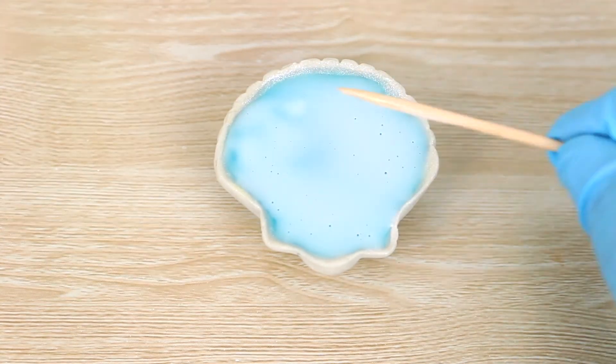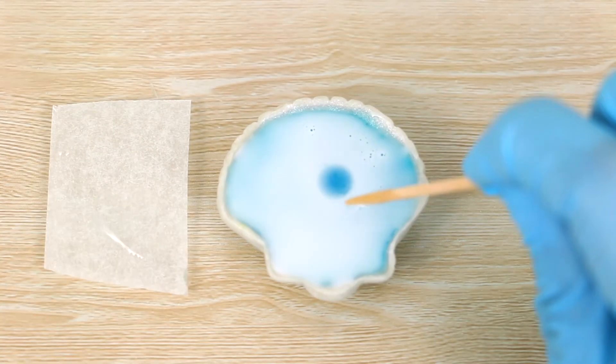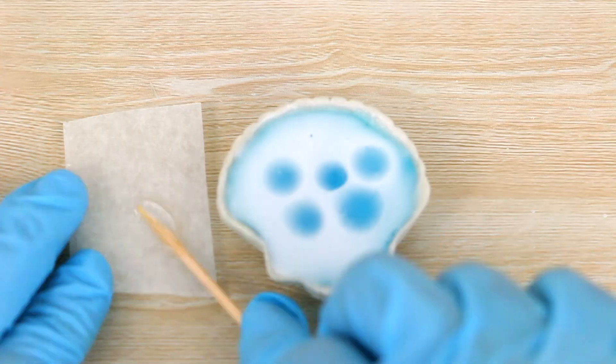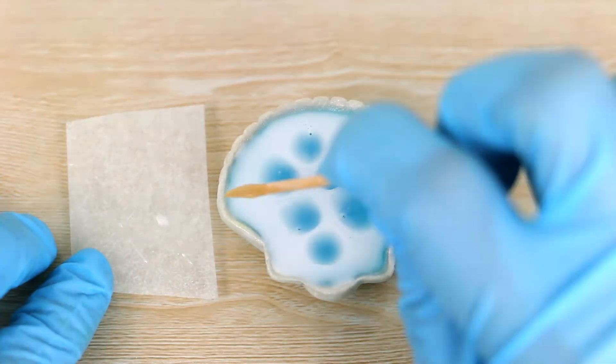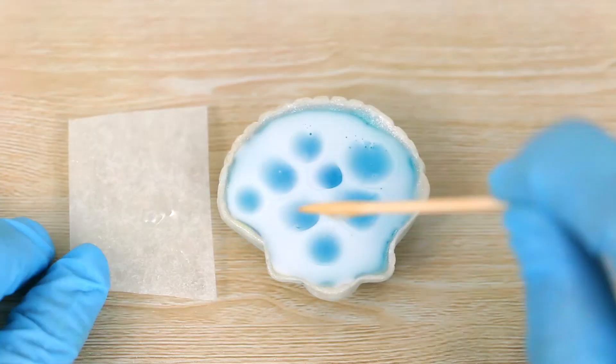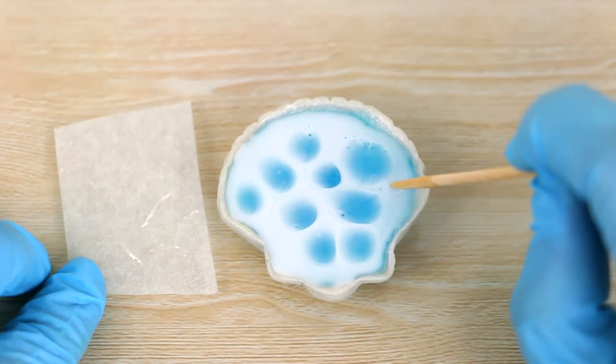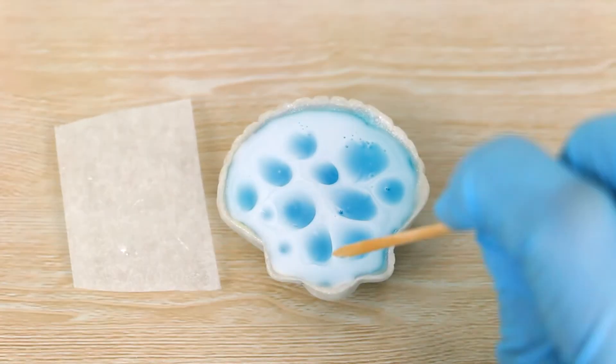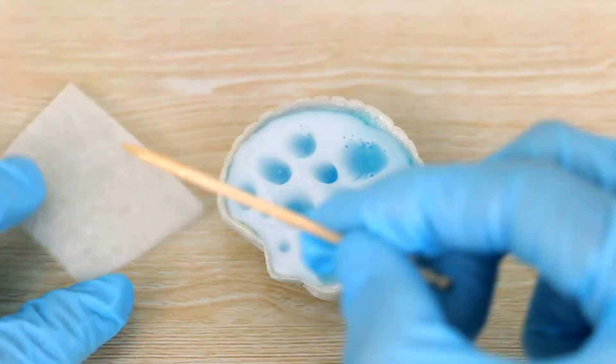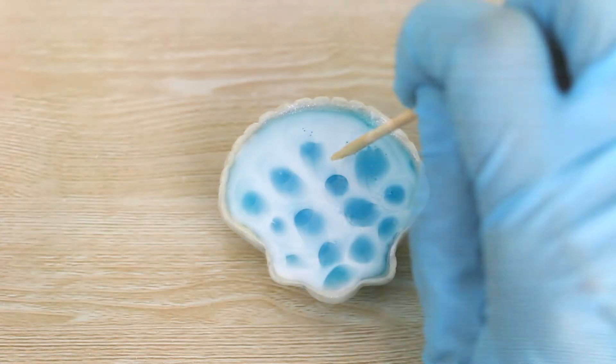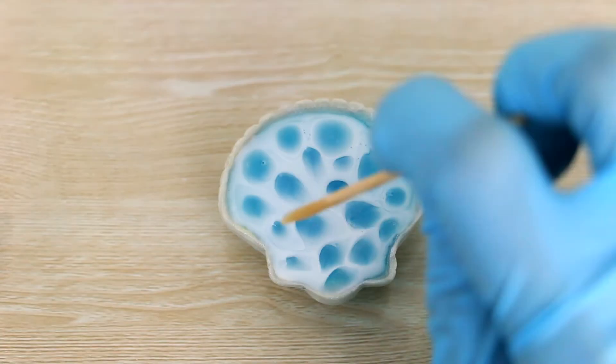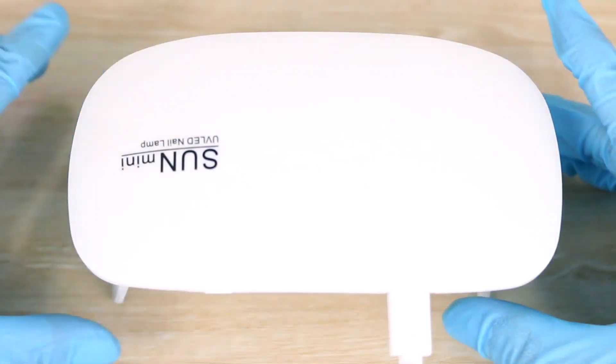So while that's still wet, I want to make sort of a water effect. I'm dotting the surface with droplets of uncolored UV resin, just adding those on with a toothpick. And while I do this, the white resin will kind of pull away and reveal the blue layer underneath. And then once that's ready, I'm going to cure it under my UV lamp.